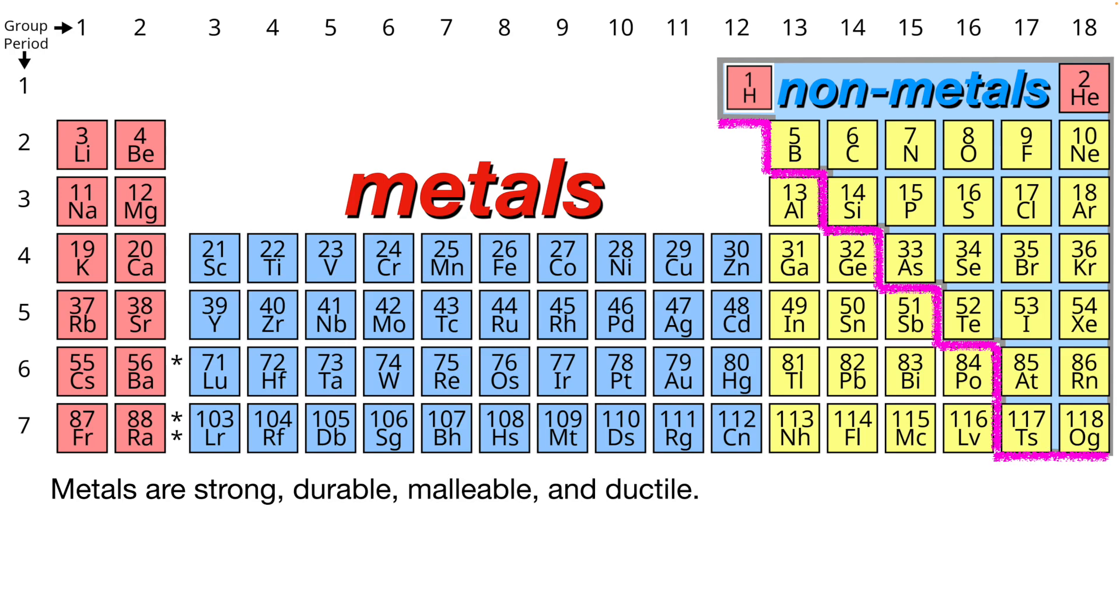Something else about metals is that metals are strong, durable, malleable, and ductile. And some of those words are a little confusing. This just means they're long-lasting. Durable means long-lasting. And then malleable and ductile mean they're bendable and stretchable. They can do these things without easily breaking.